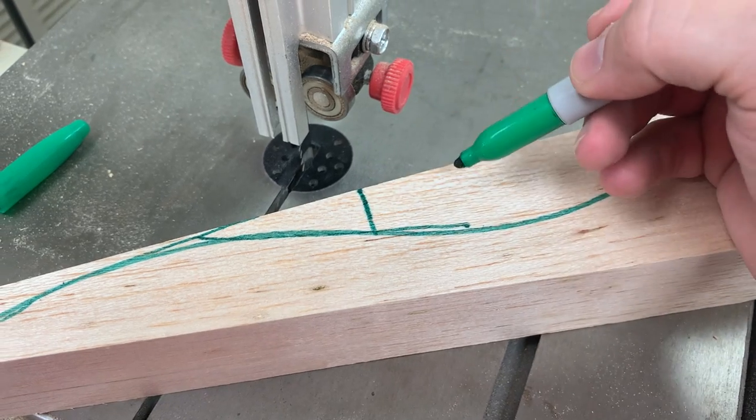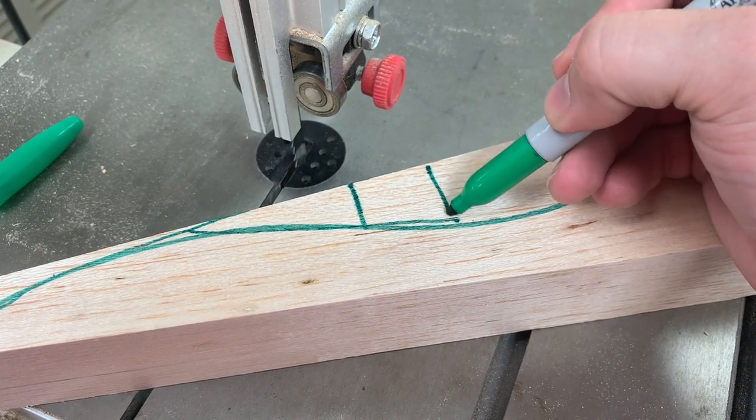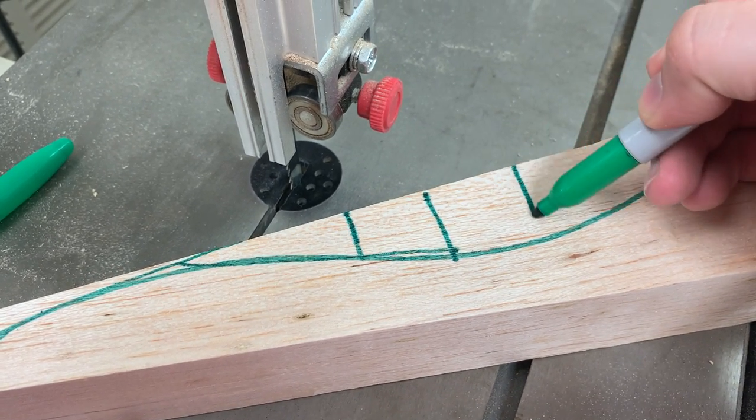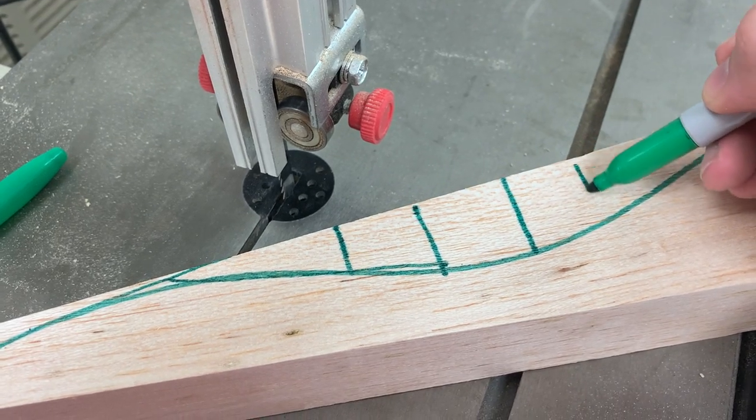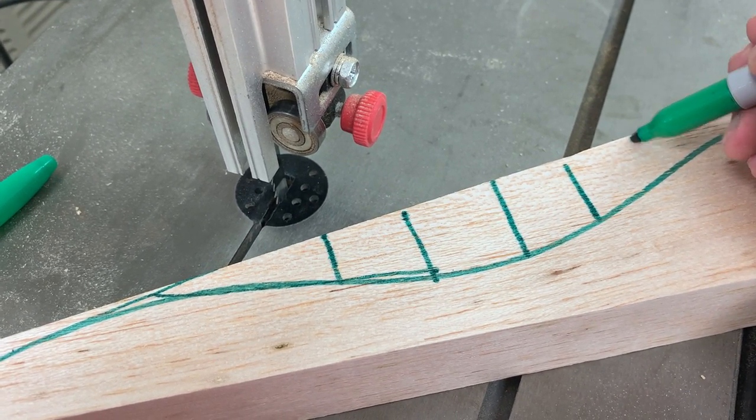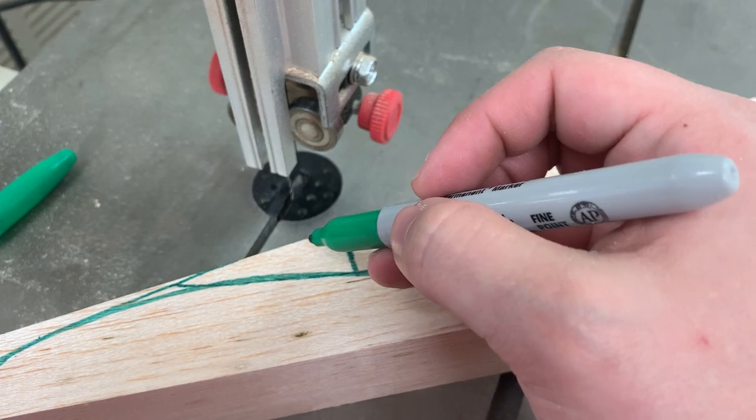So on my bandsaw, I'm going to come straight in at these couple of places and then go straight back out. What that's going to do is as I then cut along that curve, each little chunk is going to break free and that's going to relieve pressure along the blade as I'm making my cut.